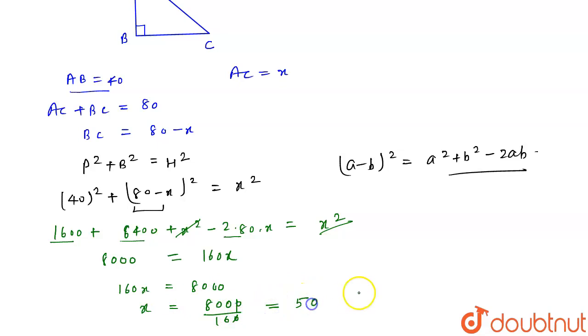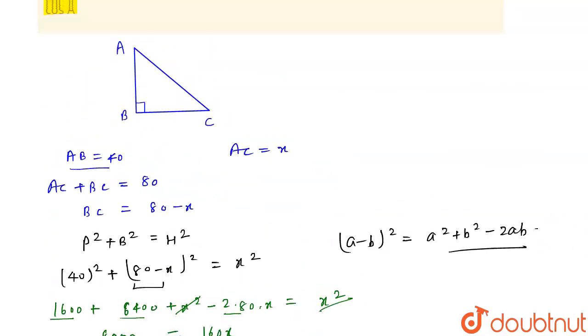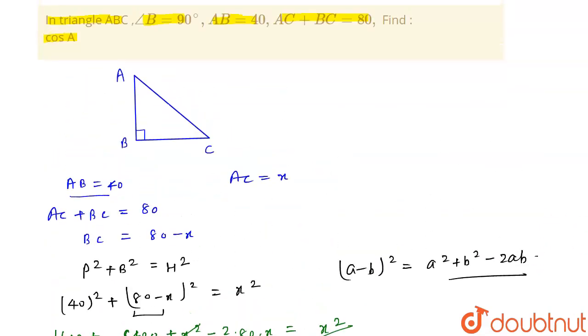x will become equal to 8000 upon 160, zeros will cancel out and it will become 50. So the value of x is 50.